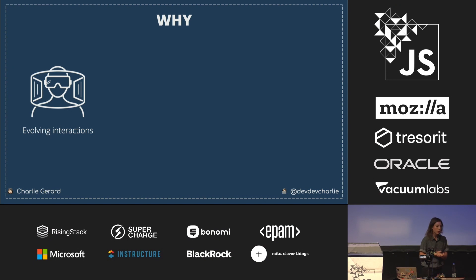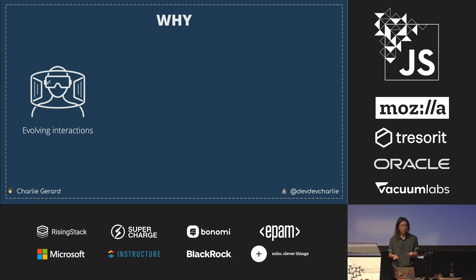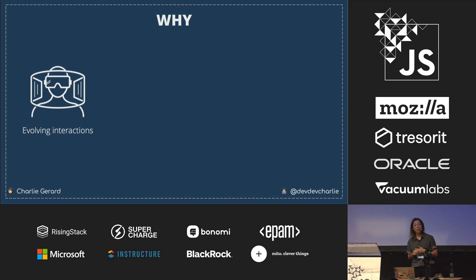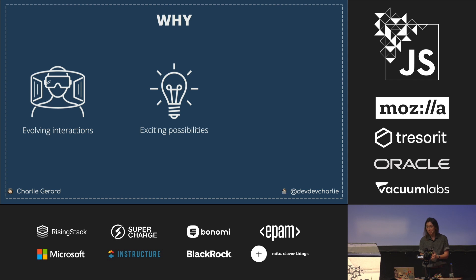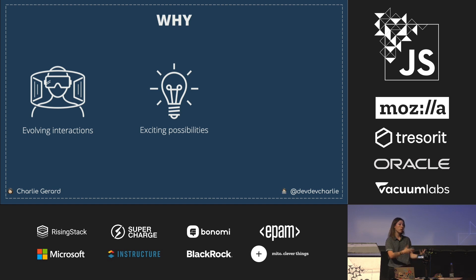Why am I talking about this? The first reason is the evolution of interactions. We still mostly interact with technology using laptops or mobile phones, but there's more: voice interaction, VR, AR. I believe there's potential in textile interactions as well, and as technologists it's our role to at least keep in touch with what's going on. Another reason is exciting possibilities — technology has a lot more opportunities beyond just building things for money.